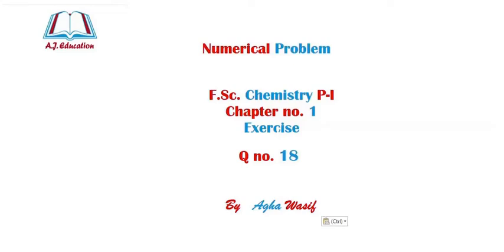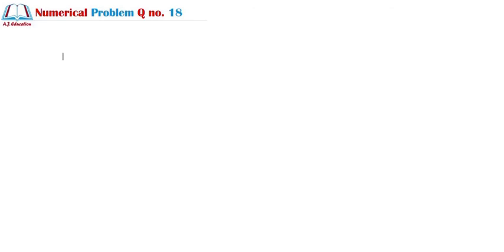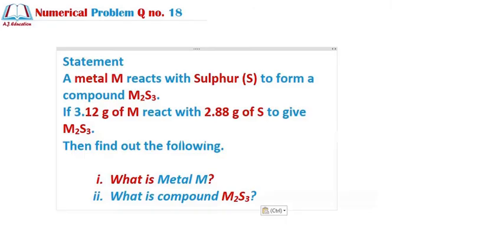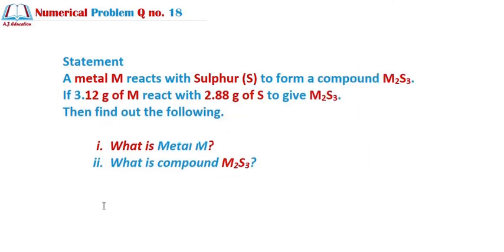Assalamu alaikum, hello and welcome back. Today we are going to solve a numerical problem from FSC Chemistry Part 1, Chapter 1, Exercise Question Number 18. This is Agha Wasif Ali Khan. The problem states that metal M reacts with sulfur to form compound M2S3. If 3.12 grams of metal M react with 2.88 grams of sulfur to give M2S3, we need to find out what is the metal M and what is compound M2S3.